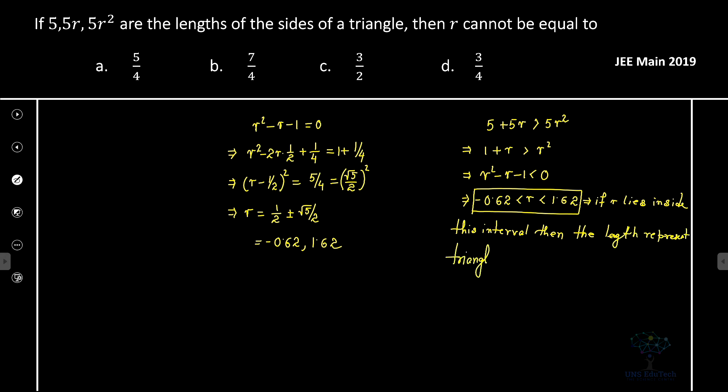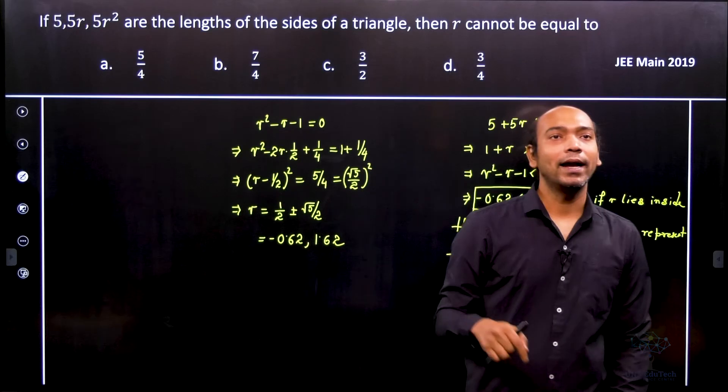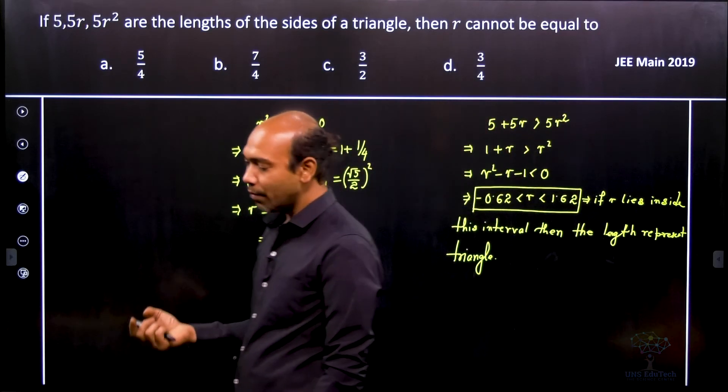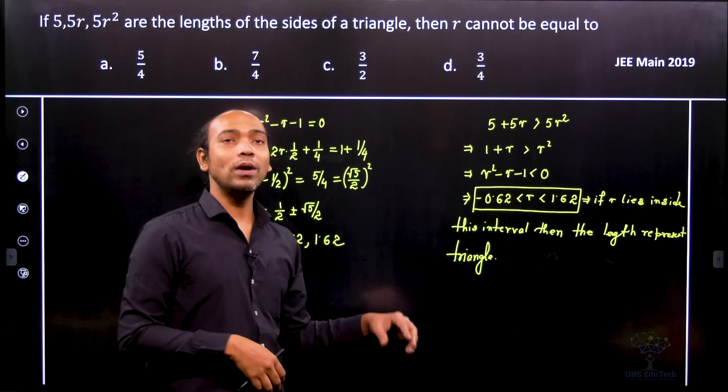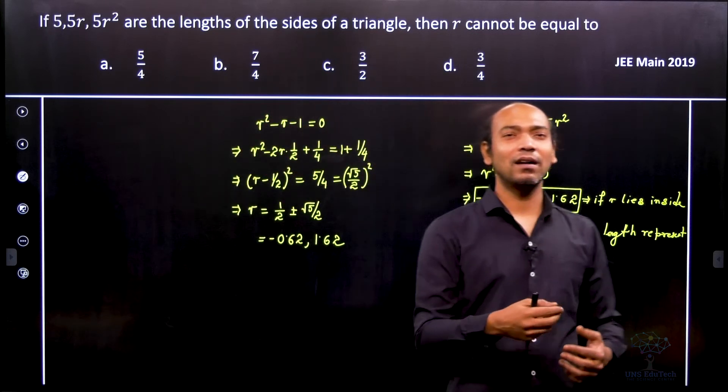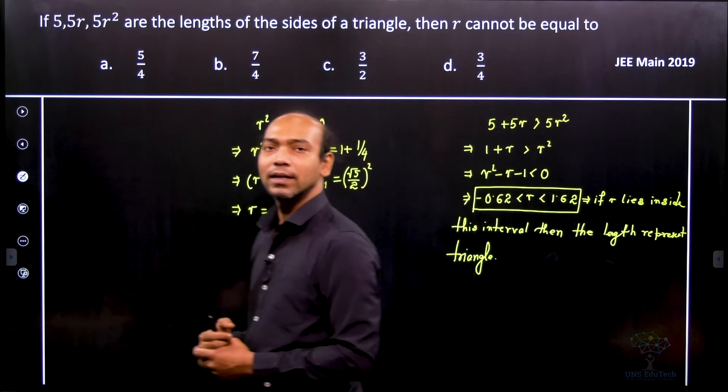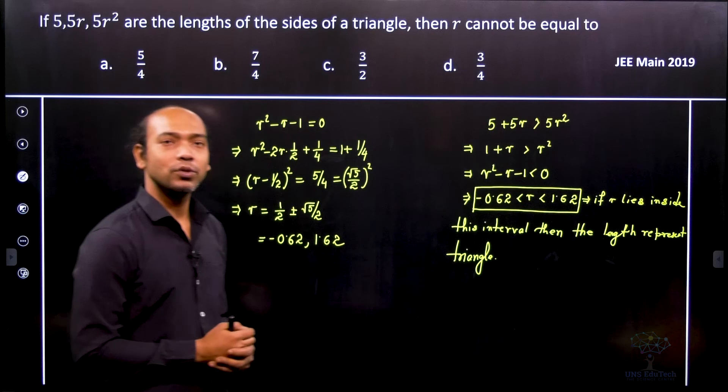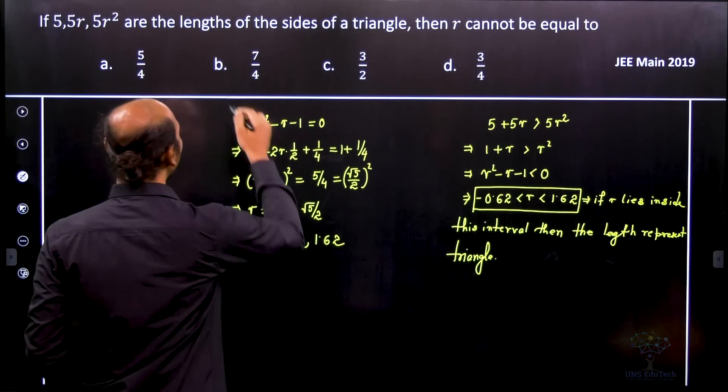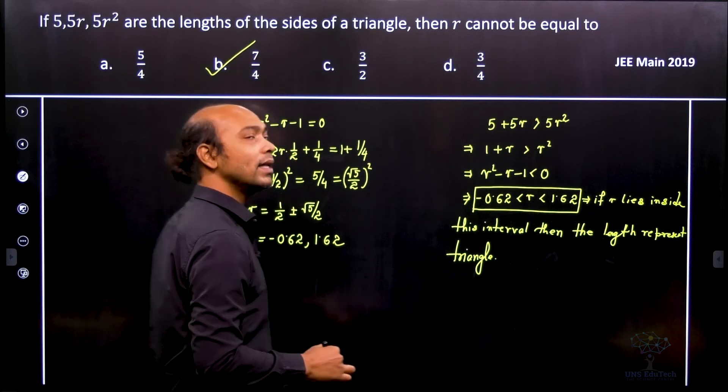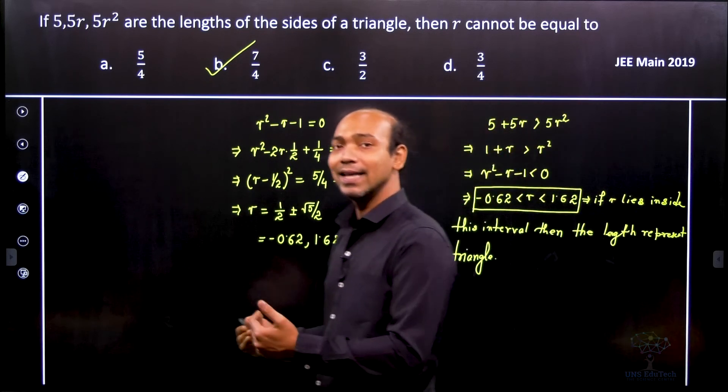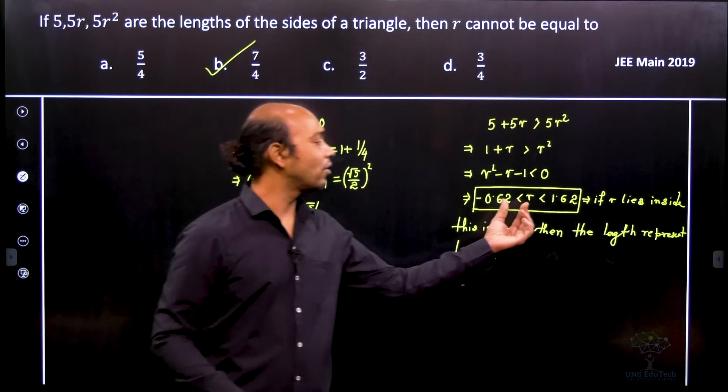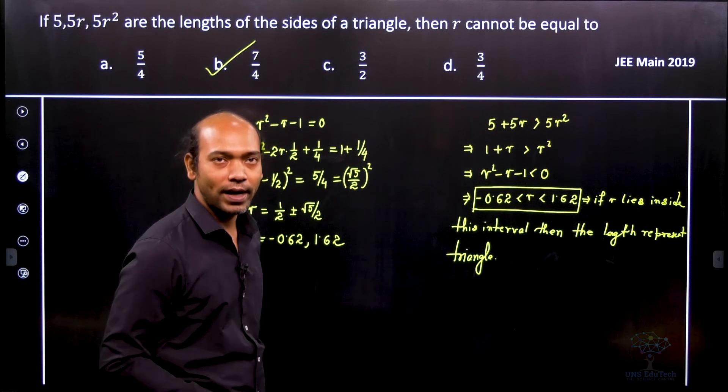Now in this corresponding problem, see that 5/4, 3/2, and 3/4 always lie inside this interval. Only 7/4 is more than 1.62. So that's why in this particular problem, option B is the only correct option. Why? Because 7/4 actually lies outside that interval, or is greater than 1.62.